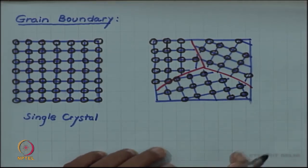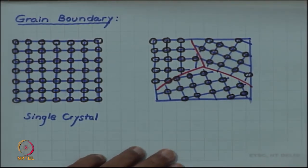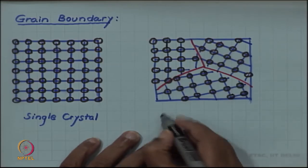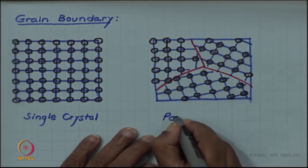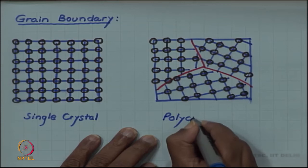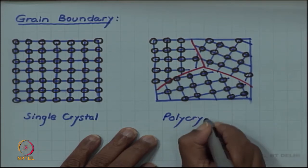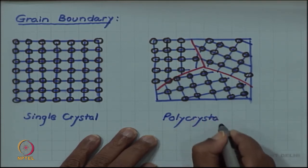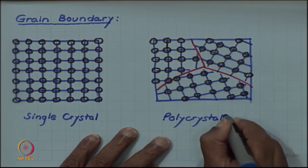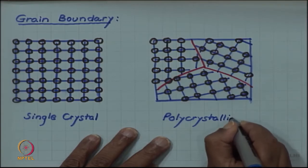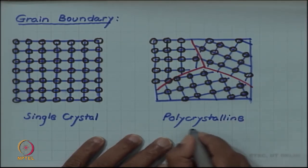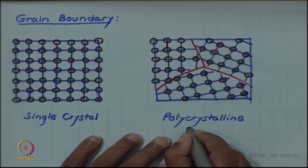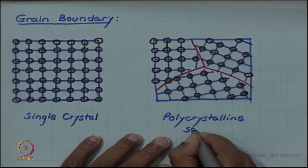This kind of sample is more common in engineering and in practice, and these are called polycrystalline. One has to make a special effort to get a single crystal. This is a polycrystalline sample.